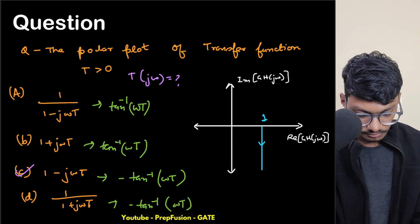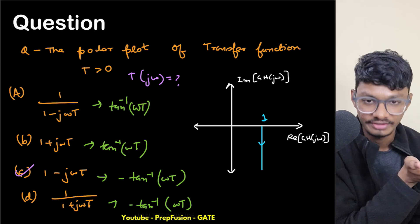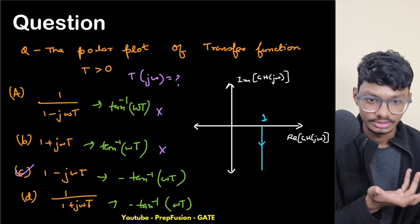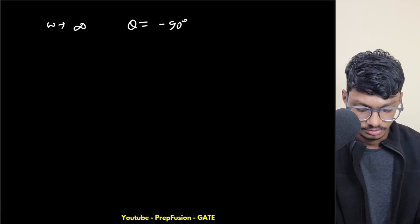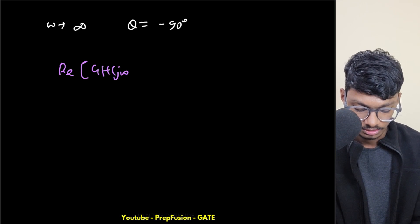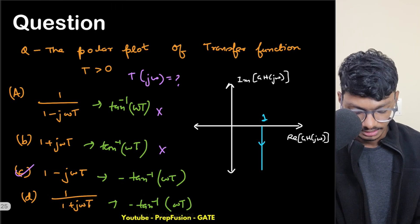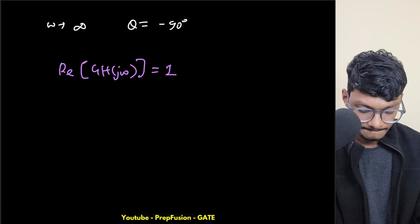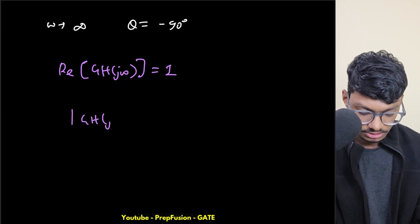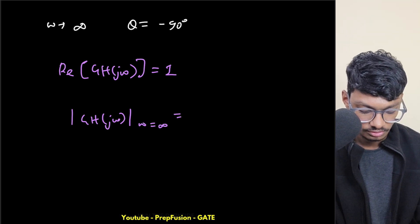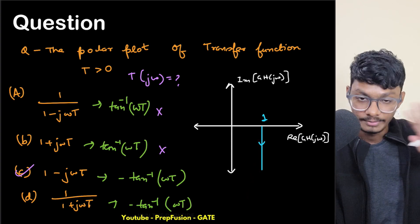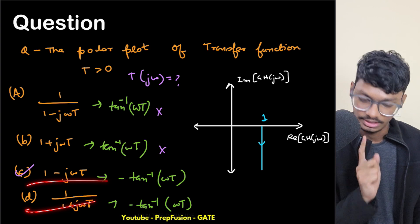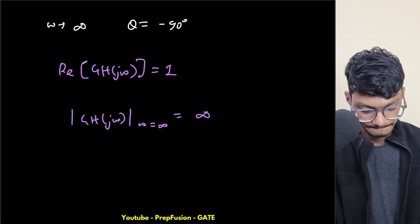So these two options provide plus 90 degrees and these two provide minus 90 degrees as omega goes to infinity — I can eliminate the plus 90 ones. Now between the remaining two: checking the real part condition, Real[G(jω)] must be constant equal to one for all omega. This option satisfies it; the other has a real part that is a function of omega. Also the magnitude going to infinity confirms option C is correct.